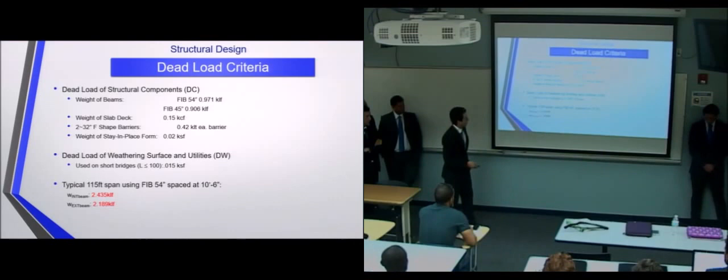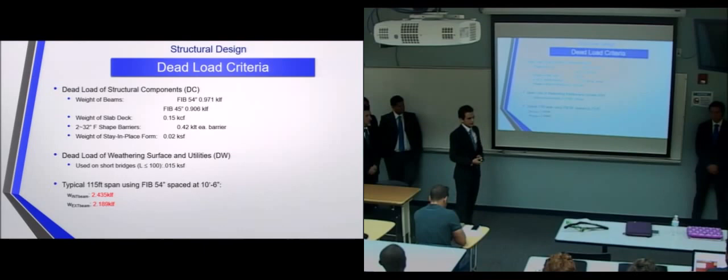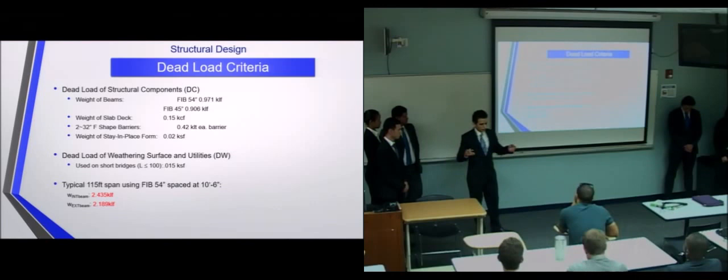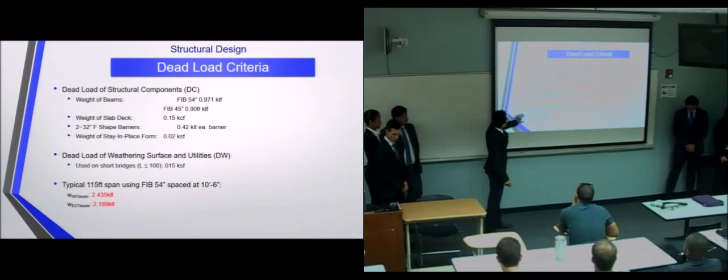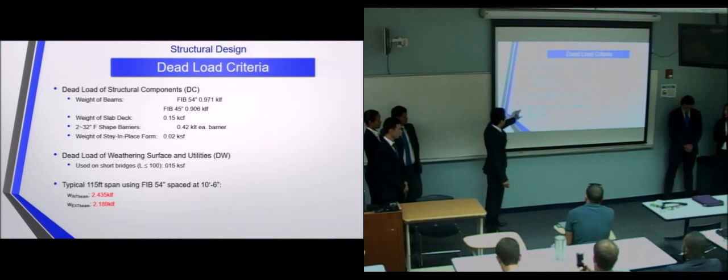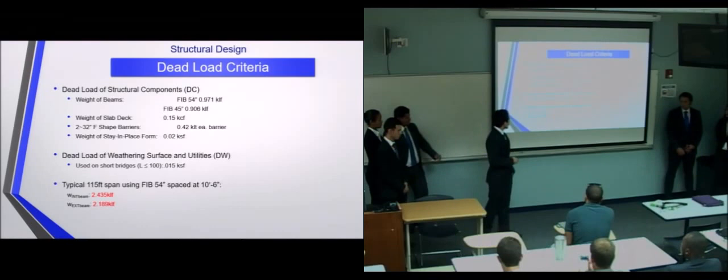And for the dead load, the dead load is going to be comprised of two dead loads. We're looking at a dead load of the structural components, and we're looking at a dead load of wearing surfaces and utilities. Now, for the dead load of the structural components, we're looking at four things: the weight of the beams, the weight of the slab deck, the weight of the two 32 inch F-shaped barriers, and that's going to be divided evenly throughout the beams for the purposes of this calculation here. And we're going to be taking into account the weight of the stay-in-place forms. Now, since this typical 115-foot span that we're looking at is greater than 100 feet, we're going to neglect the dead load of the wearing surfaces and the utilities. And for this particular bridge, we have a dead load at the interior beams of 2.435 kips per linear foot, and the weight of the external beams, 2.189 kips per linear foot.